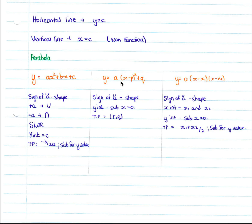For the form y equals a(x minus p) squared plus q, the sign of a gives the shape of the graph. The y-intercept is found by substituting x equals 0, and the turning point is (p, q) where p is the x value and q is the y value at the turning point. For the root form, the sign of a gives the shape, the x-intercepts are x1 and x2, the y-intercept is found by substituting x equals 0, and the turning point x value is (x1 plus x2) over 2 — substitute back in to get the y value.